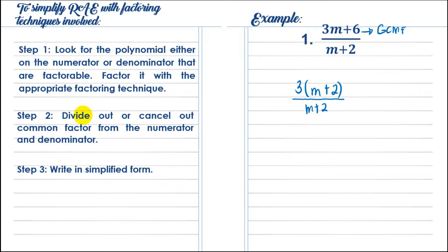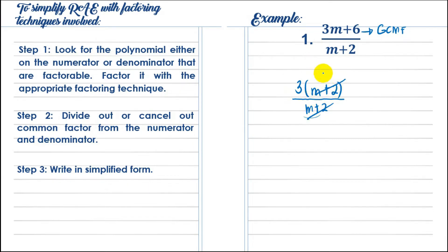Step 2 is to divide out or cancel out the common factor from the numerator and denominator. We are going to cancel out factors — common factors, not terms. We have 3 and m plus 2 as the two factors in the numerator, and m plus 2 in the denominator. The common factor m plus 2 cancels, becoming 1. So we have 3 times 1, which is 3 over 1, or simply 3.